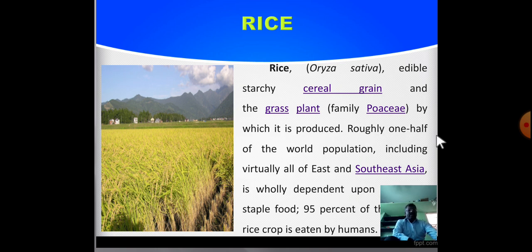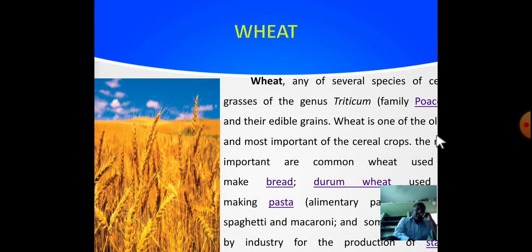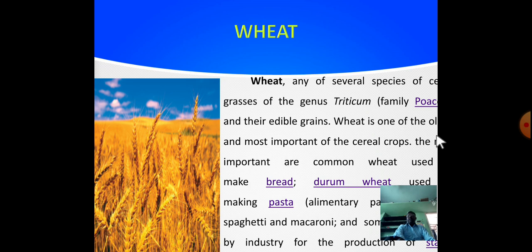Next, another important food material: wheat. Wheat refers to any one of several species of cereal grasses of the genus Triticum, of the family Poaceae, and their edible grains.